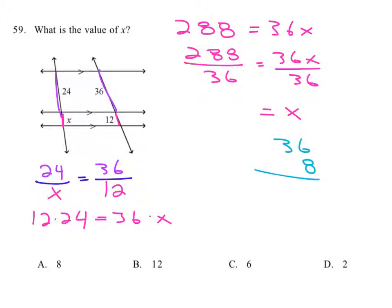36 times 8. Because then, 8 times 6 is 48. Carry the 4. 8 times 3 is 24. Plus 4 is 28. And that is our 288. So it was 36... 36 times 8 is 288. So 288 divided by 36 is 8. And that's the answer.